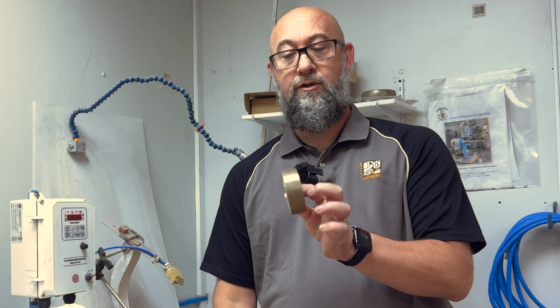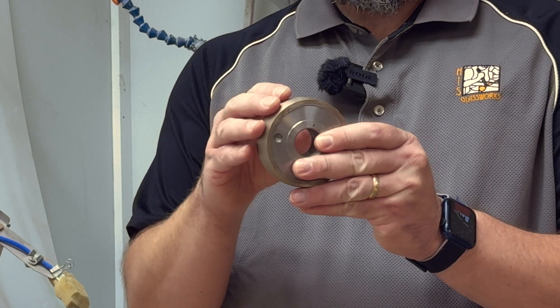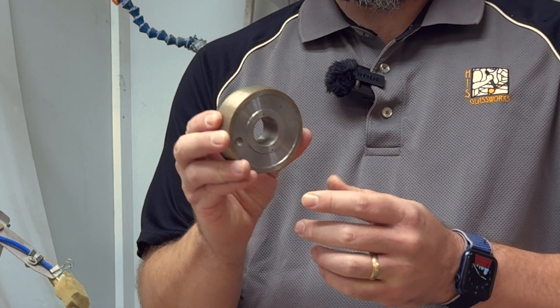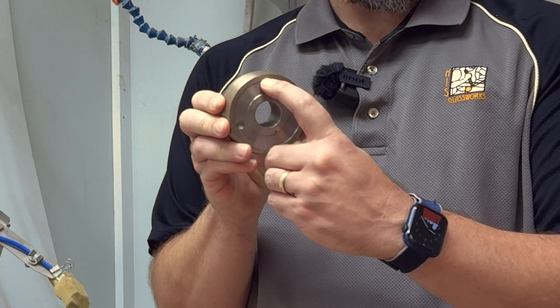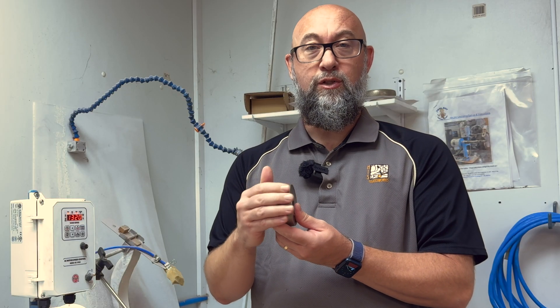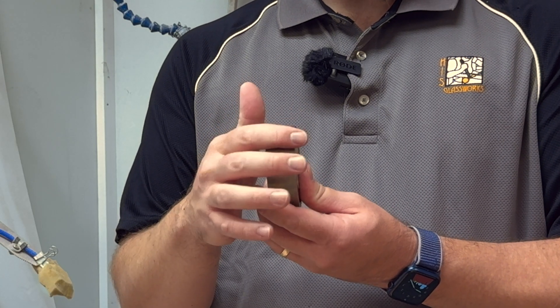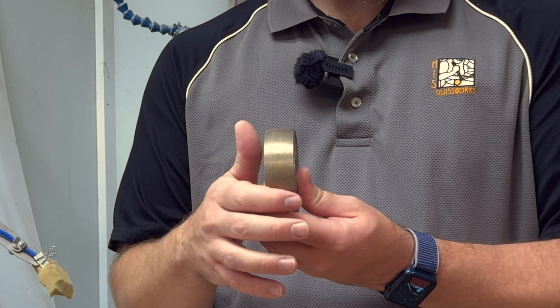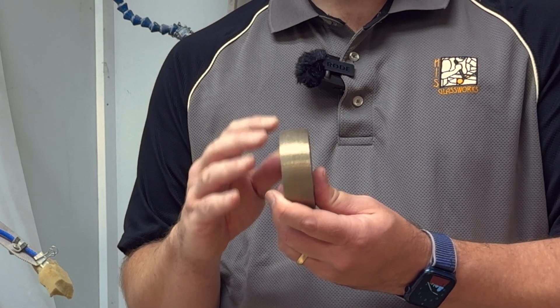Our other option is a sintered diamond wheel. This is where the diamond is impregnated through a softer metal matrix all the way through the wheel. So we've got probably about 5 millimeters worth of diamond on this wheel. So as these diamonds wear over time, newer diamonds will be exposed in this metal as the older diamonds fall out.